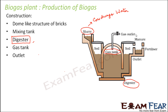Finally, there is the gas outlet, from which the biogas is taken out. Slurry input is given from the mixing tank, goes into the digester where the actual process takes place, biogas is formed, stored in the gas tank, and then taken out through the gas outlet. This is the overall construction of a biogas plant.